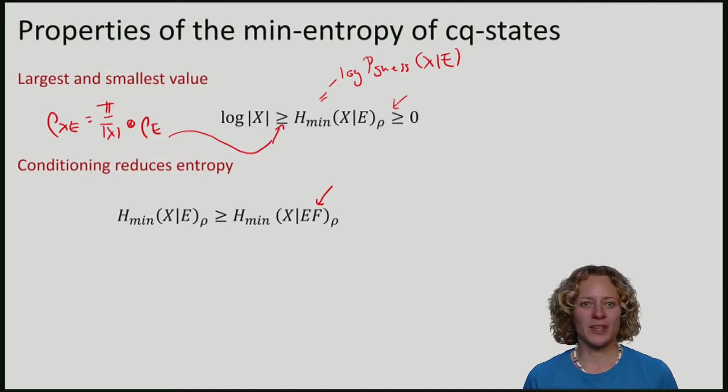This is very intuitive if you think about the probability of guessing. If I try to guess the string x given just e, I can certainly not do better than if I try to guess this x given E and some other register f. F can only help me. In terms of the min-entropy, this leads to the fact that conditioning reduces the entropy.